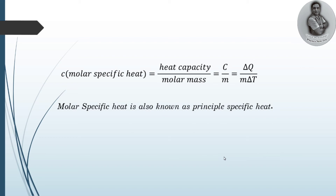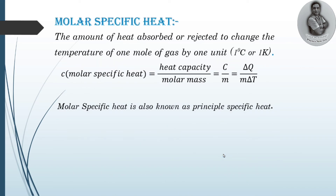Now I am going to give you the molar specific heat, which is most important. The name itself indicates it is applicable for one mole of a gas — mole is related to gas, so it is clearly applicable for gases. The amount of heat absorbed or rejected to change the temperature of one mole of a gas by one unit — one Kelvin — is known as molar specific heat. Molar specific heat (small c) is given by heat capacity C divided by molar mass, which gives us the modified formula. Molar specific heat is also known as principal specific heat.